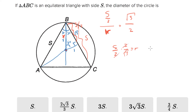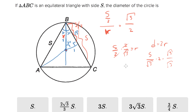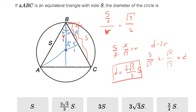But we want diameter. Diameter equals 2r, so we actually need s over root 3 times 2. And you'll notice there's no root 3 in the denominator, so let's multiply by root 3 over root 3, so that we end up with 2 root 3 over 3 times s, which is that second answer choice.